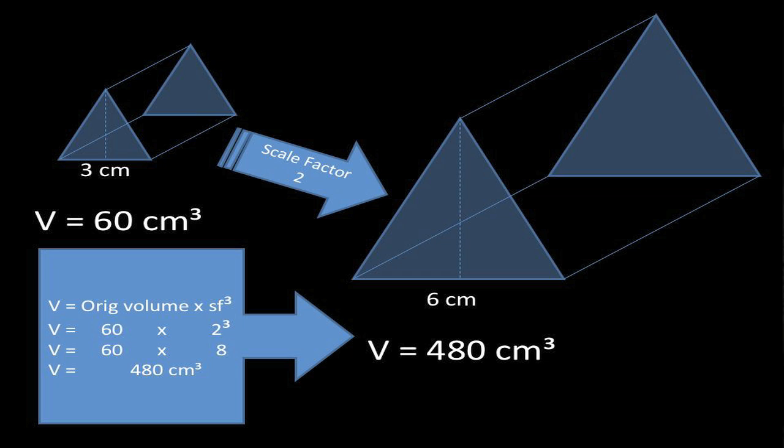The original volume was 60, the scale factor was two, and since we have to multiply the length times two, the width times two, and the height by two, that means we're really multiplying that volume by eight. That's what two cubed is. So 60 times eight is 480 centimeters cubed. That would be the volume of the larger similar triangular prism.